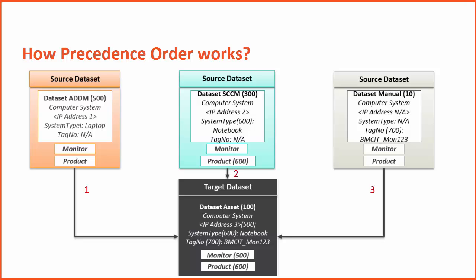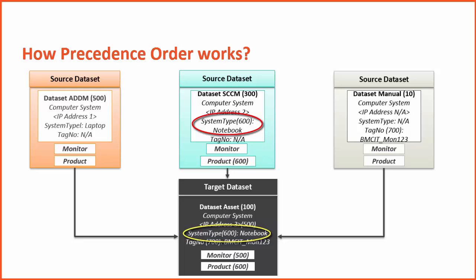When the first job of ADDM runs, all the information is populated from ADDM to the target asset dataset. Remember that SCCM also discovers servers — say, for example, C1 in this case. Now, during the merge operation for the SCCM dataset, the system type and model attributes are overwritten in the target dataset. This is because those two attributes have higher precedence order in SCCM than that for ADDM.